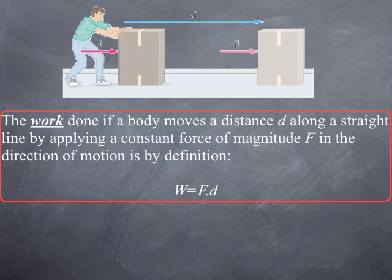Here the work done by moving a body a distance d along a straight line, applying a constant force of magnitude F in the direction of motion, by definition is just the magnitude of the force F multiplied by the distance d.